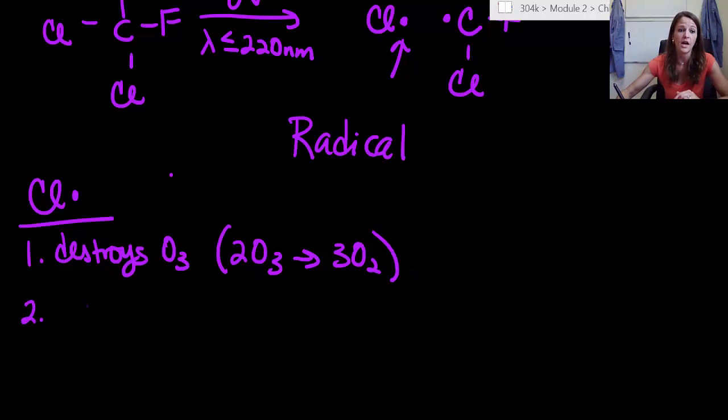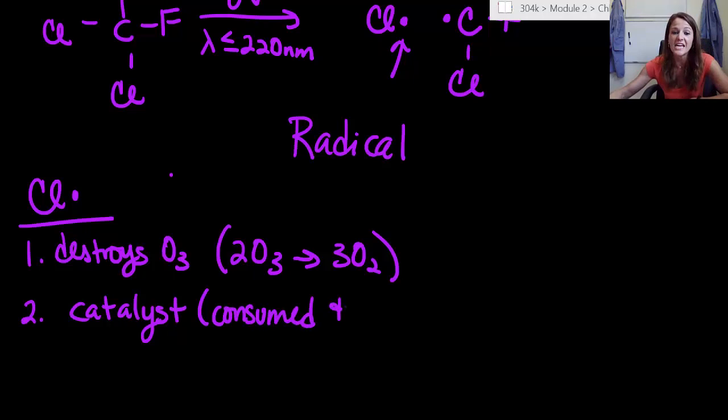Now, how does this happen? Well, it turns out that chlorine radical is actually a catalyst. Now, we've mentioned catalysts before, but just in case you've forgotten, they are something that are consumed, so they're used as a reactant right in the very beginning. And, this is the most important part, they are regenerated.